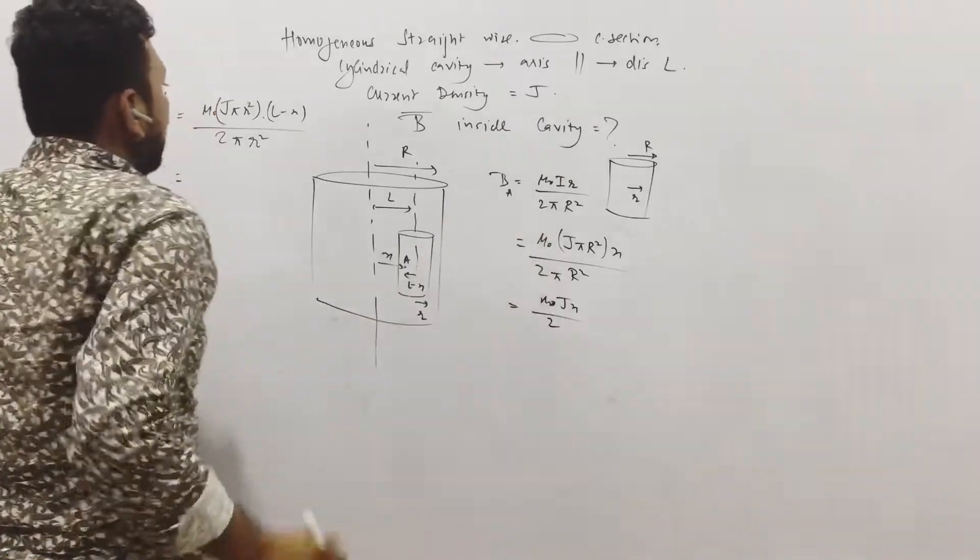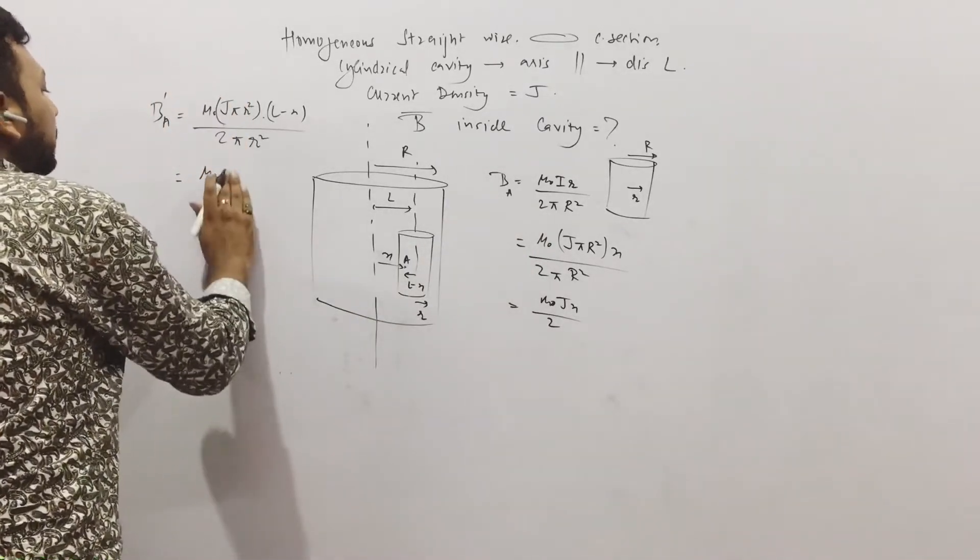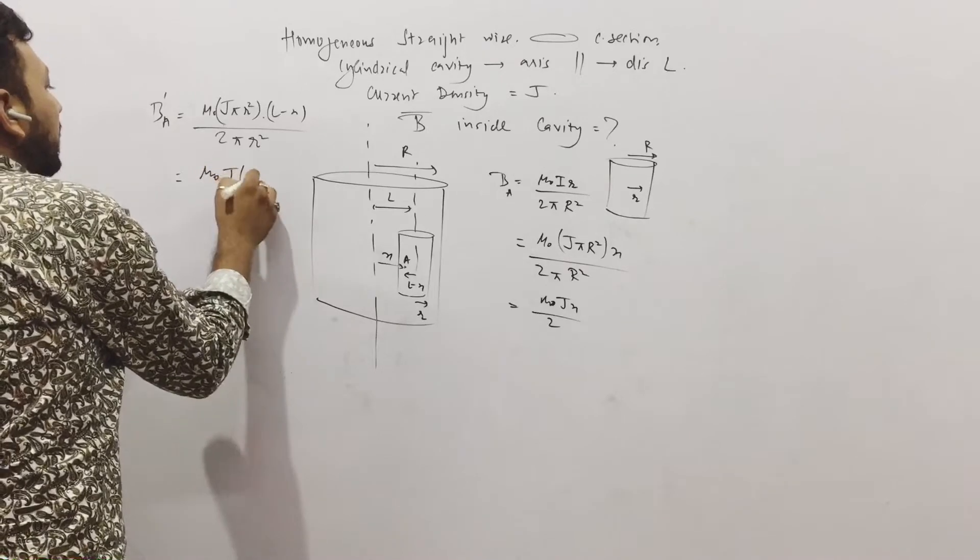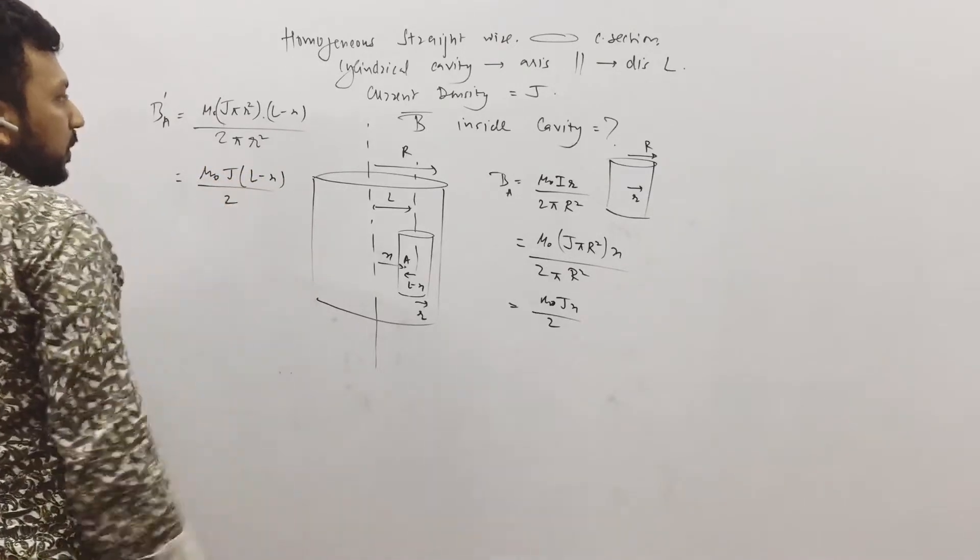By the same formula, pi r square may cancel it as mu naught J, mu naught J, L minus x upon 2. Simple.